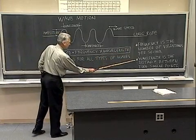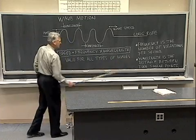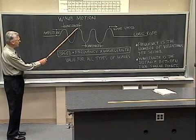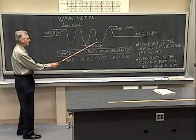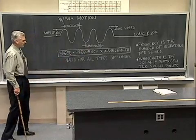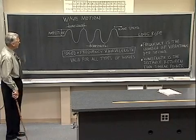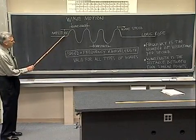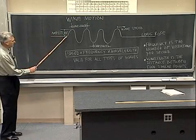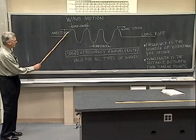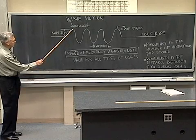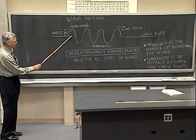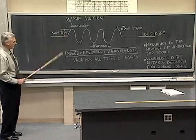The wavelength is the distance between two similar points — such as from crest to crest, or from trough to trough. The amplitude of the wave is the displacement from the equilibrium position. The rope at its neutral position versus its point of maximum displacement — that distance from the top of the wave to the center is called the amplitude.